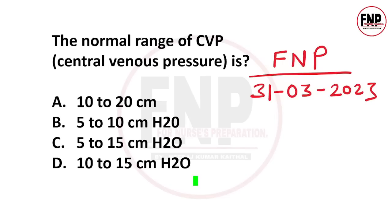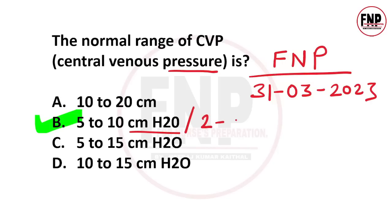The right answer is Option B, 5 to 10 cm H2O. जब भी हम pressure की बात करते हैं, तो इसका measurement cm H2O या mmHg में किया जा सकता है. जैसे blood pressure 80/120 mmHg normal होता है, उसी प्रकार central venous pressure को mmHg में मापें तो 2 से 6 mmHg माना जाएगा. अगर examiner 2 से 6 mmHg दे तो सही है, या cmH2O में 5 to 10 दे तो भी सही है. आप चाहें तो इसका screenshot ले सकते हैं, अपने revision के लिए.